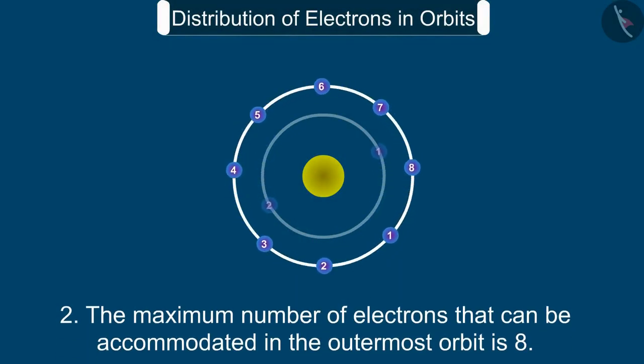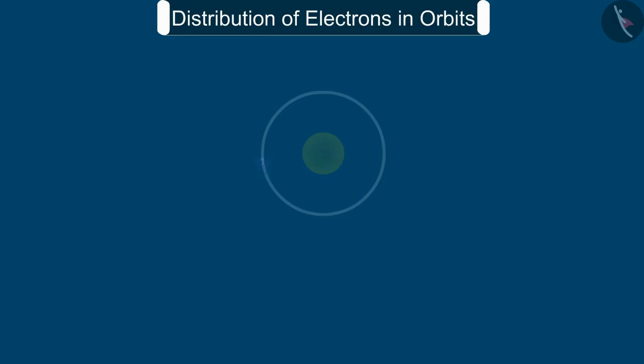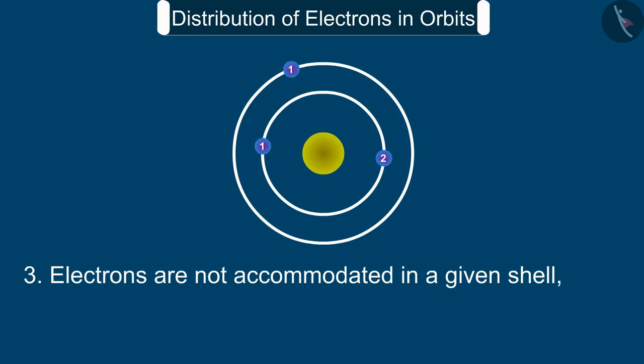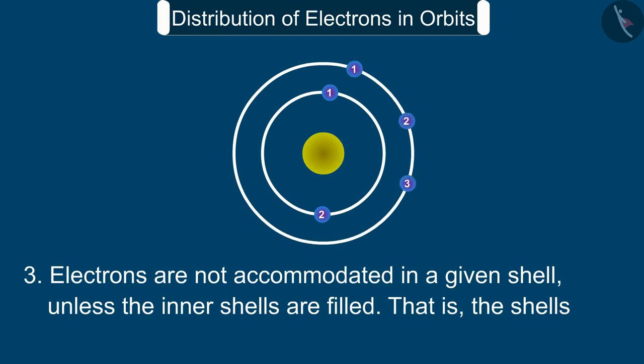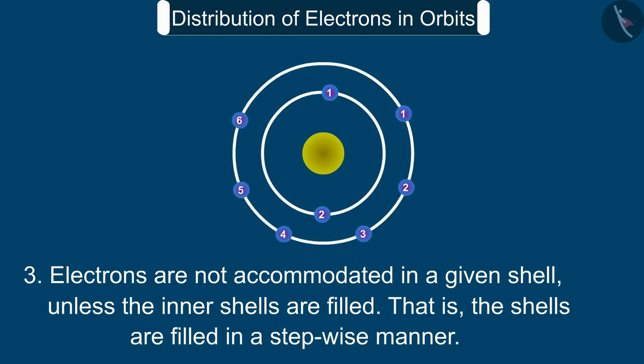Two, the maximum number of electrons that can be accommodated in the outermost orbit is 8. Three, electrons are not accommodated in a given shell unless the inner shells are filled, that is the shells are filled in a stepwise manner.